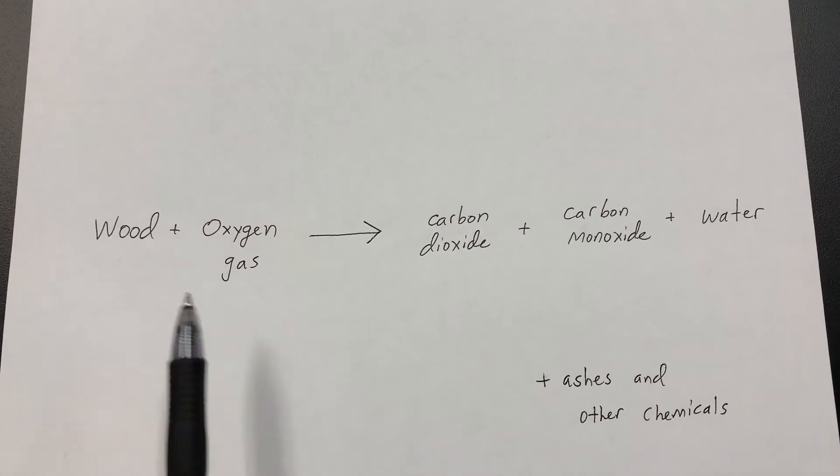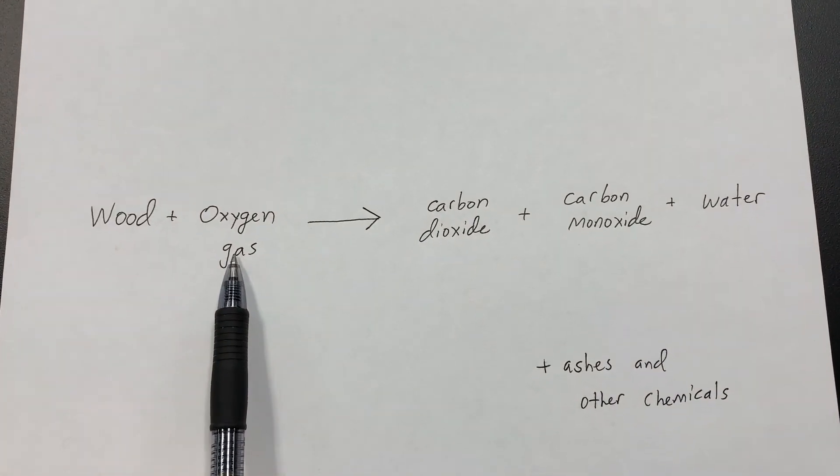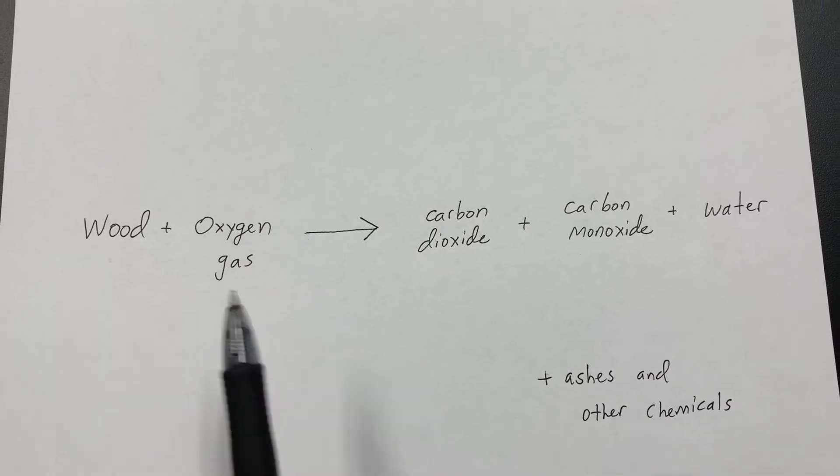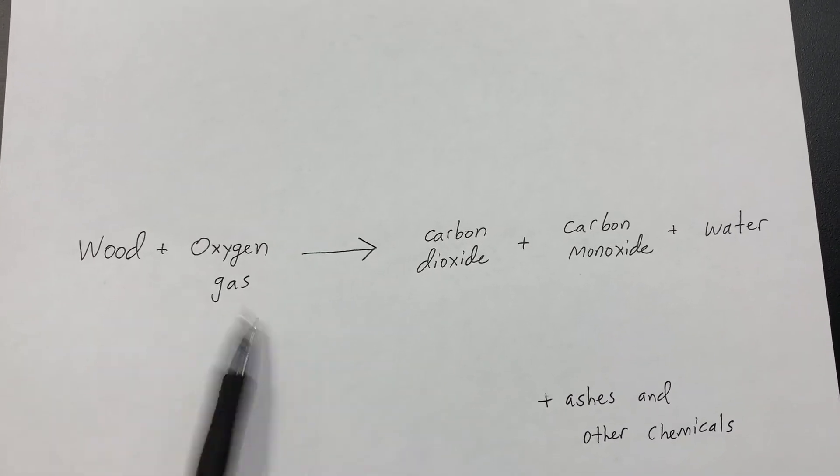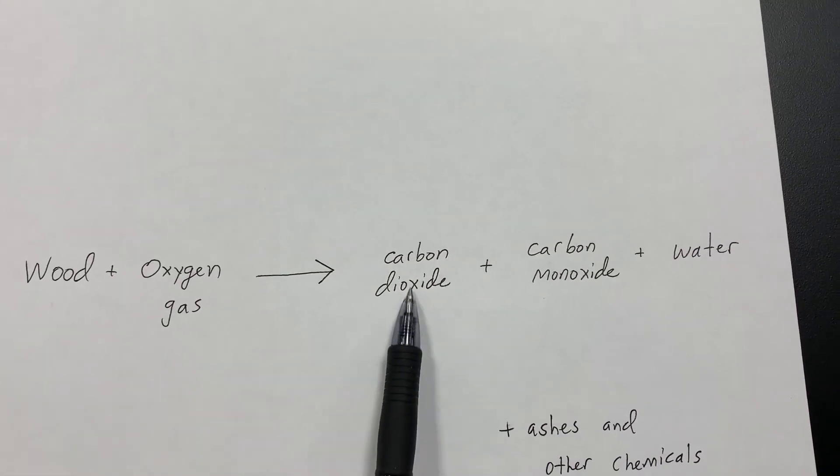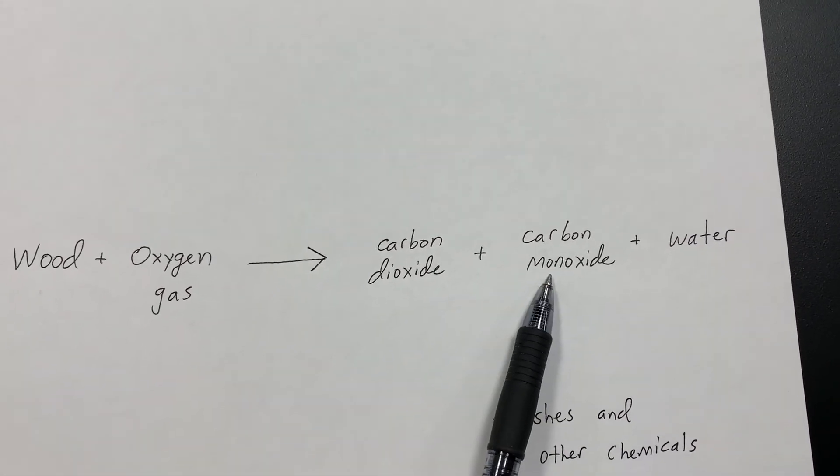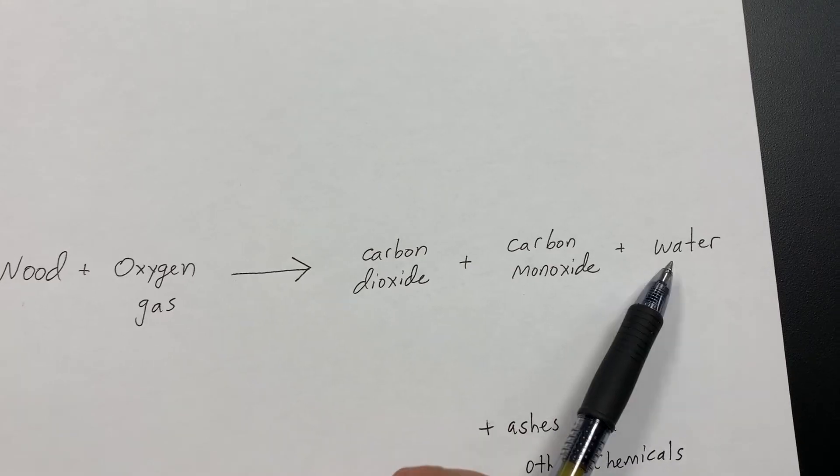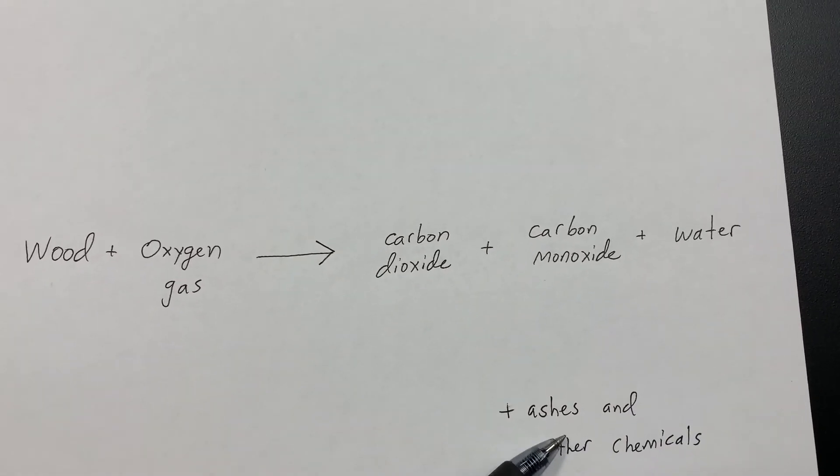When you burn wood in the presence of oxygen gas—which is what happens because there's oxygen in the atmosphere; 21% of the air is made of oxygen—it makes carbon dioxide, carbon monoxide, water in the form of steam, plus ash and other chemicals.